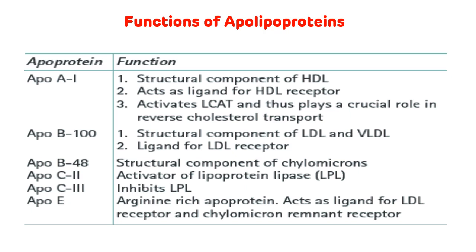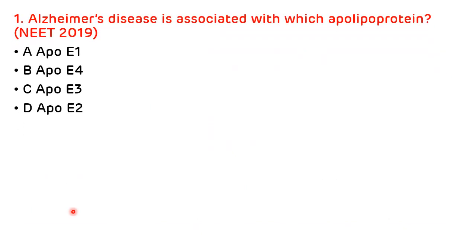Now we will see various multiple choice questions. The first question, asked in NEET 2019: Alzheimer's disease is associated with which ApoE? Options are ApoE1, ApoE4, ApoE3, and ApoE2. ApoE3 is the most common isoform; individuals carrying two ApoE2 alleles are more prone to type 3 hyperlipoproteinemia; and individuals carrying two ApoE4 alleles are more prone to Alzheimer's disease. So the correct answer is B, ApoE4.